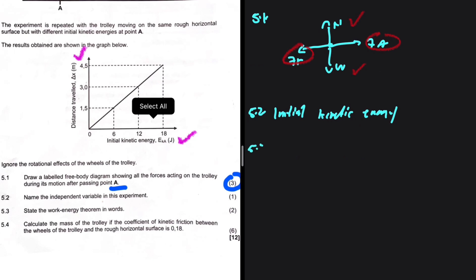Question 5.3: State the work-energy theorem in words. The work-energy theorem states that the net work done on an object is equal to the object's change in kinetic energy. Note: you must say 'net work done on an object' — simply saying 'net work equals change in kinetic energy' is incomplete and you can lose a mark for that omission.